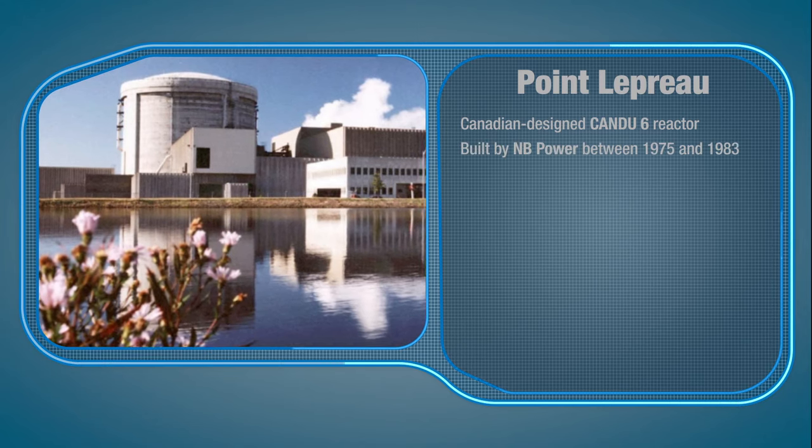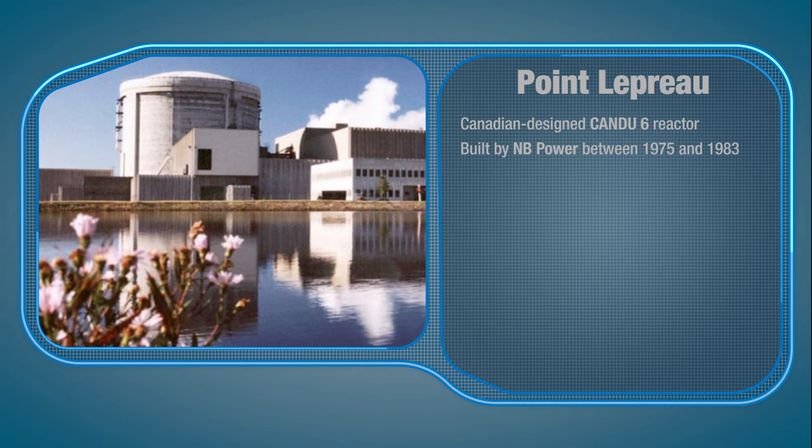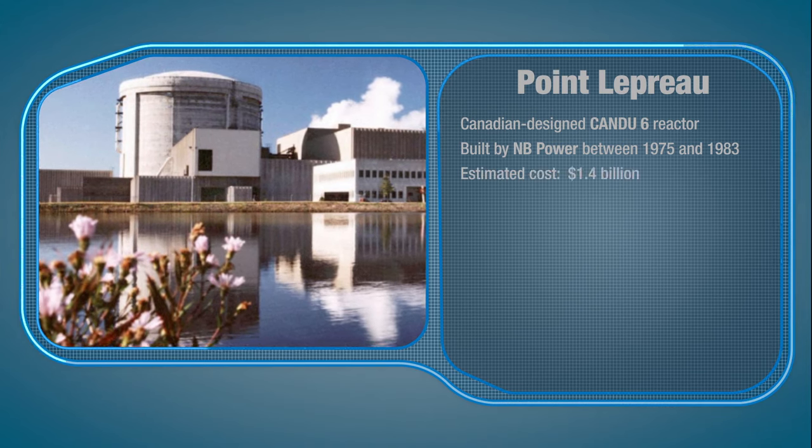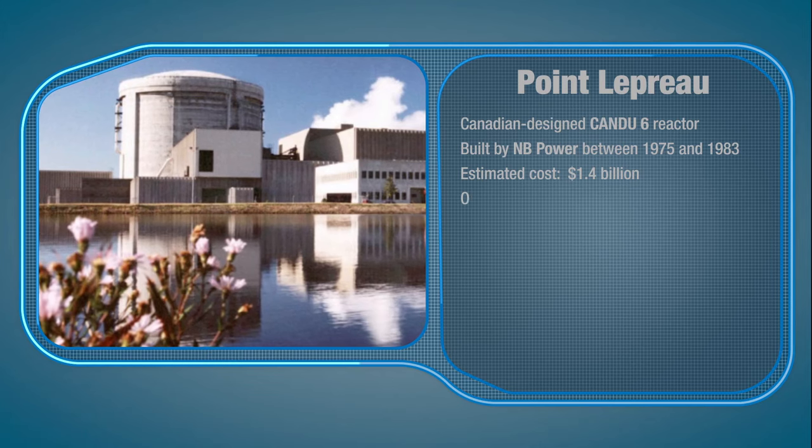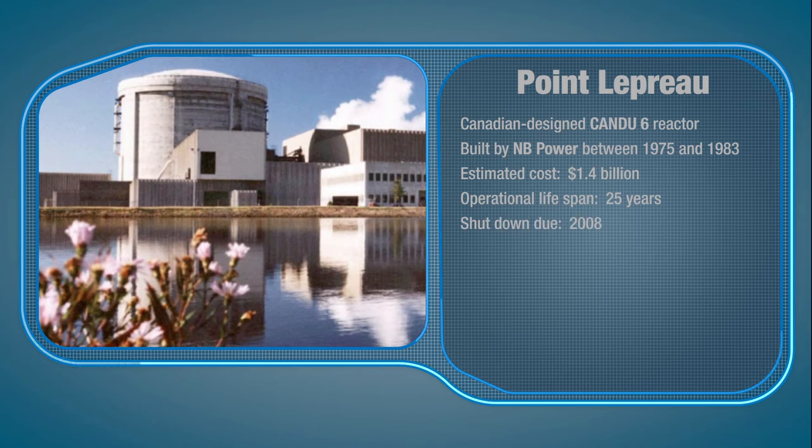The station was built by NB Power between 1975 and 1983 at an estimated cost of $1.4 billion. With an operational lifespan of 25 years, the plant was due to be shut down in 2008.